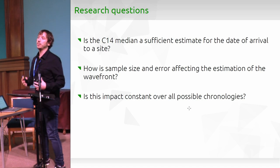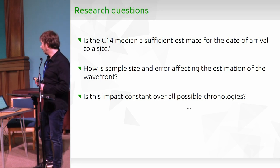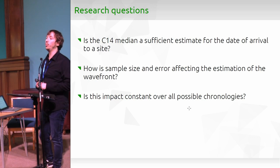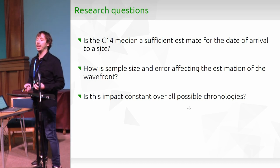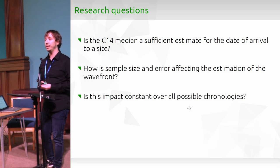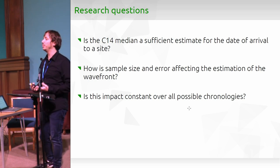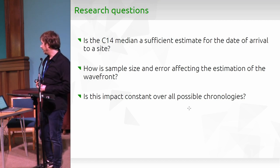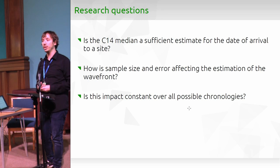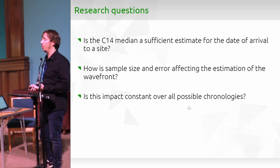Our research question addresses this methodological issue of uncertainty: is the median enough, or should we move to a method that integrates the entire probability distribution of the C14 dates? The second question is how sample size and error affect the quality of our analysis. Finally, we ask whether the impact of error and uncertainty is constant across all chronologies, or whether specific chronologies require special care.